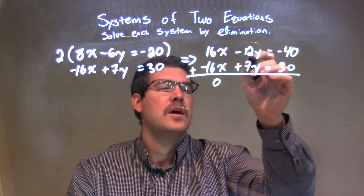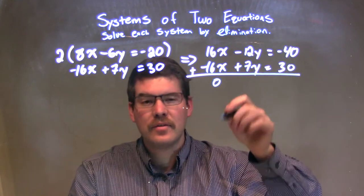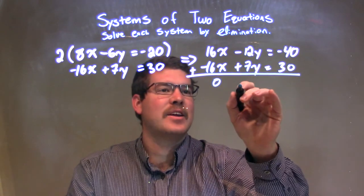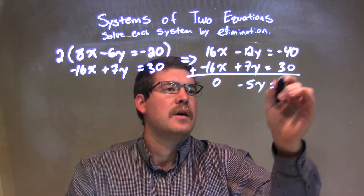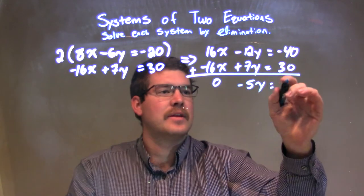Fantastic. That's what I want. Negative 12y and a positive 7y is a negative 5y. And negative 40 and positive 30 is a negative 10.